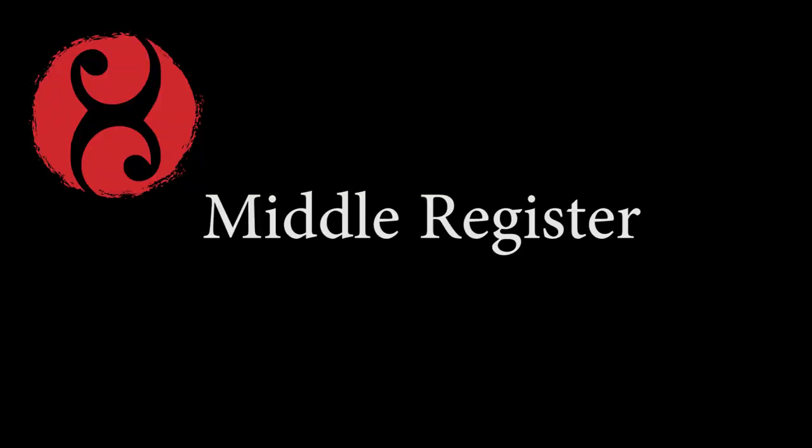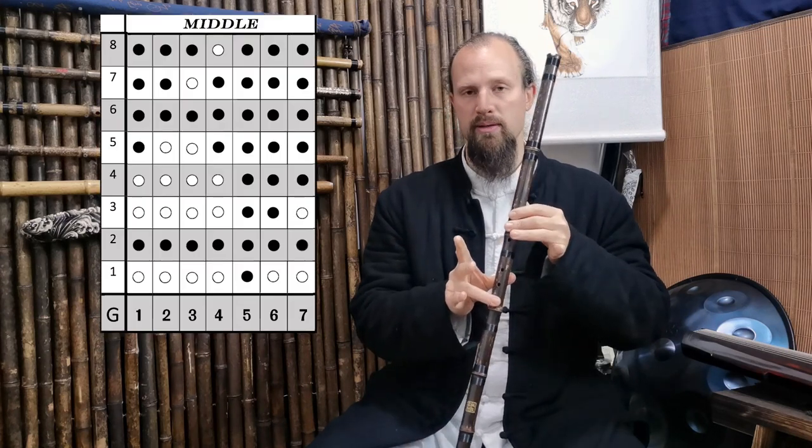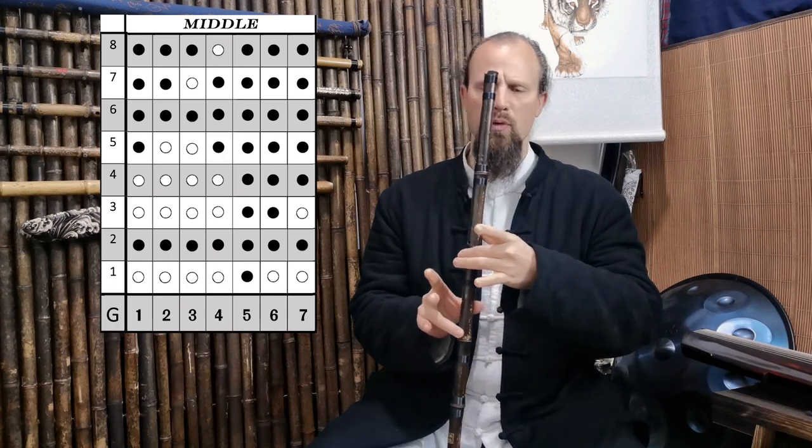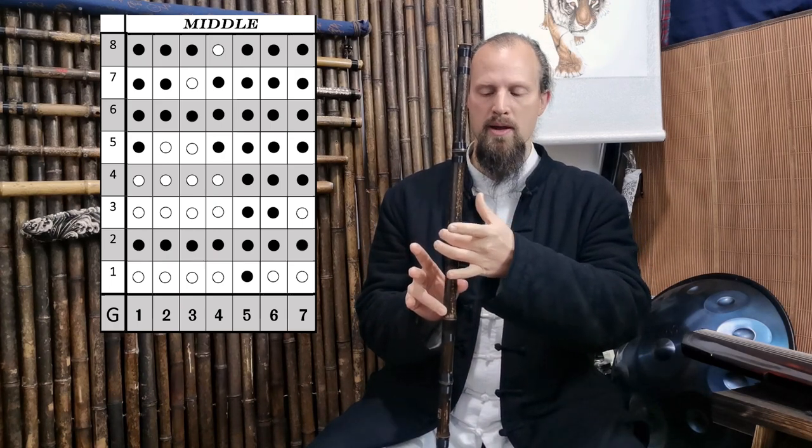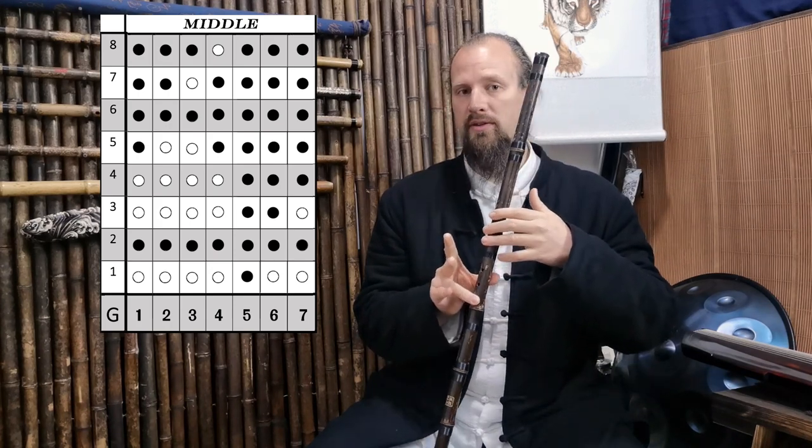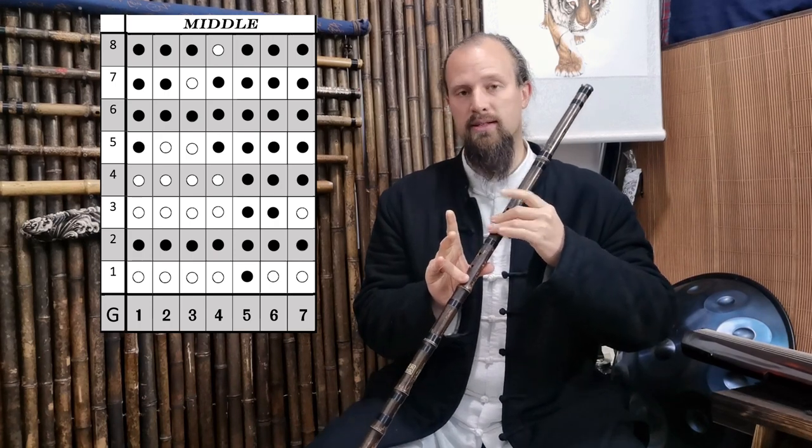Then we move into the middle register. From here the first part of it is the same. We start with 1, we lift the ring finger 2, we lift the index 3. Then when we get to 4 we're going to lift the back hole, we're going to lift the thumb. But we're also going to replace the index and the ring finger on the top. So we're going to have 2, 5, 6 and 7 covered.